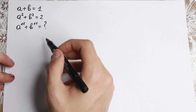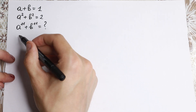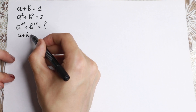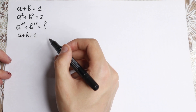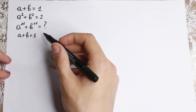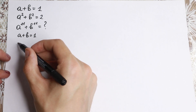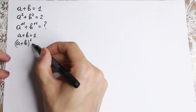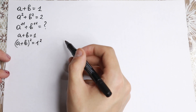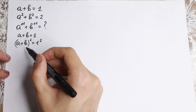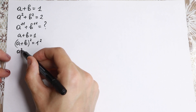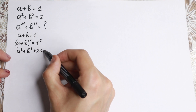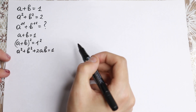So let's try to solve it. First, I want to write the first equation: a plus b equal to 1. Right now I want to raise both sides to the square. We will have a plus b squared on the left equal to 1 squared. Expanding, we get a squared plus b squared plus 2ab equal to 1.